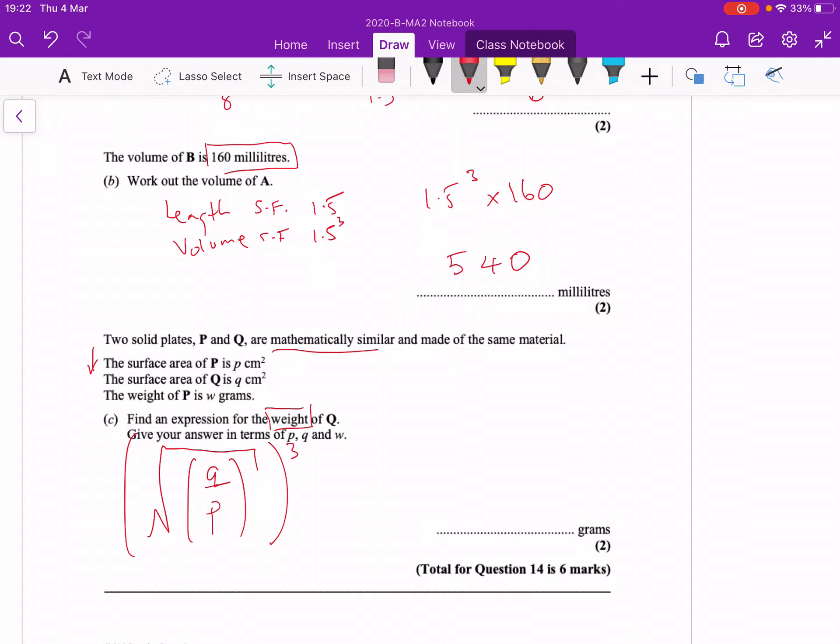And whatever the weight or the volume is of P, so it's the weight, isn't it? So we want the weight of P, which is W, and then it is that that needs timesing by the scale factor. Final answer.